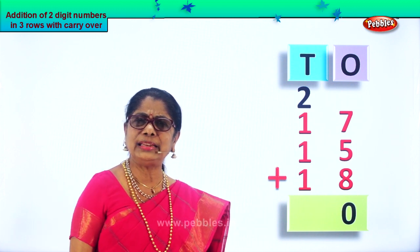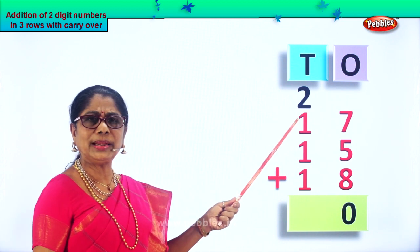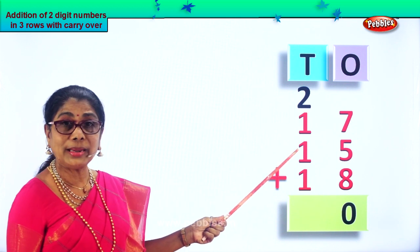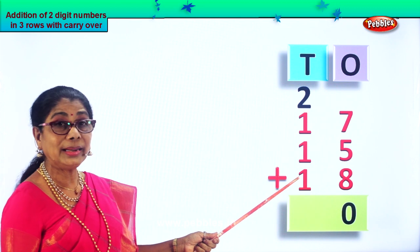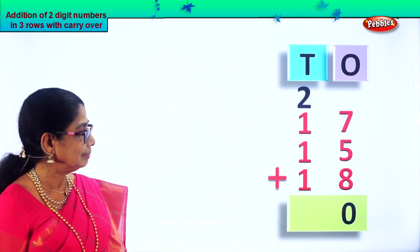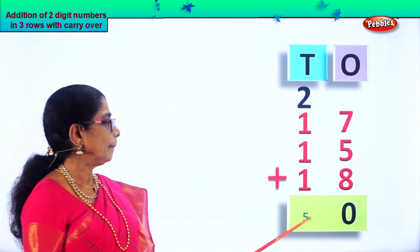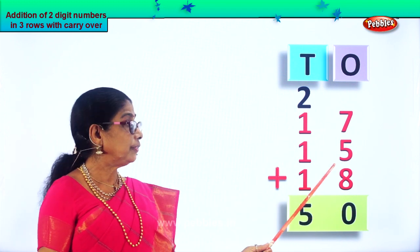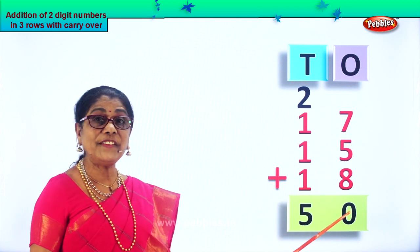Now we add all the tens. Two tens plus one ten is three tens. Three tens plus one ten is four tens. Four tens plus one ten is five tens. So we put five here — five tens, that is fifty. Seventeen plus fifteen plus eighteen equals fifty.